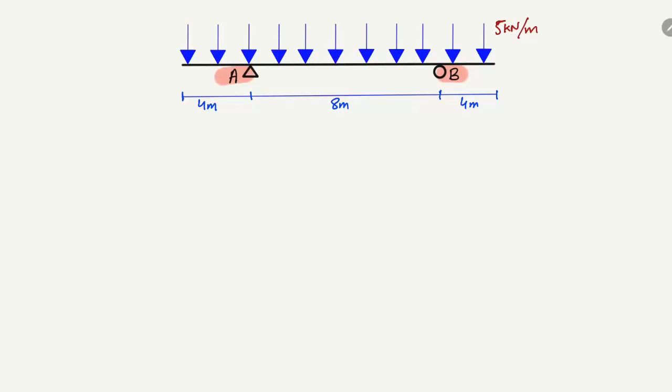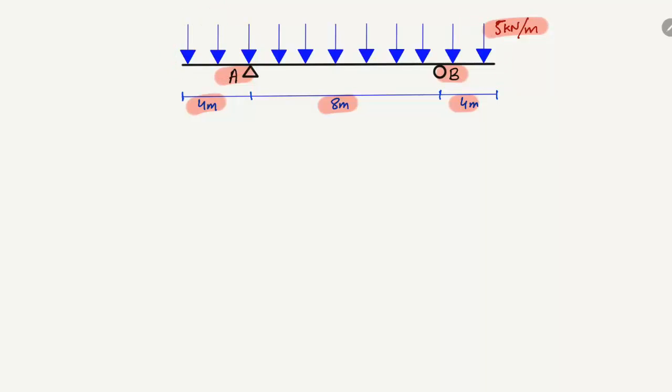This is an overhanging beam. The left overhanging portion is 4 meters, the right overhanging portion is also 4 meters, and the middle simply supported length is 8 meters. There is a uniformly distributed load of 5 kN/m acting on the entire beam. It is called an overhanging beam because there is no support provided at the two overhanging ends.